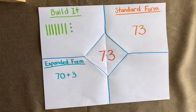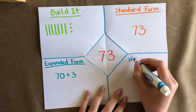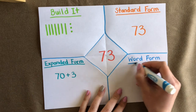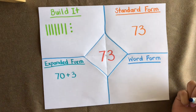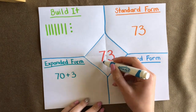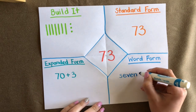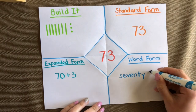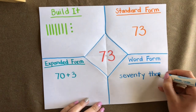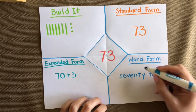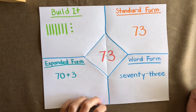Lastly, let's do word form. Word form is when you write out the number with actual letters and words. So 73 is written as seventy-three — a dash goes in between the tens place and the ones place. That's how you write 73 in word form.